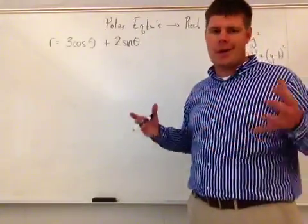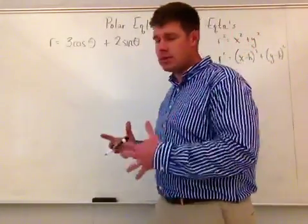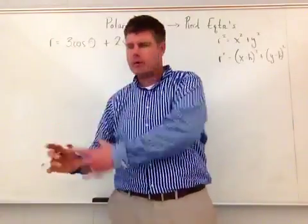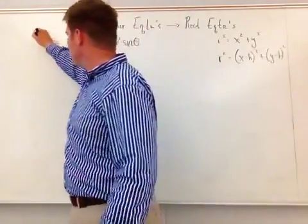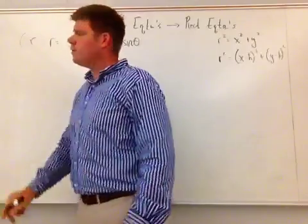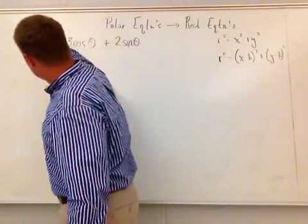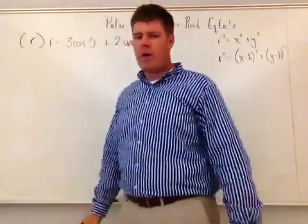So first things first, I want to get some x's and y's into this, and the easiest way to do it is to turn that into r squared. So how do I do it? I multiply it by r. So that becomes throwing an r in here, multiplying that by an r.